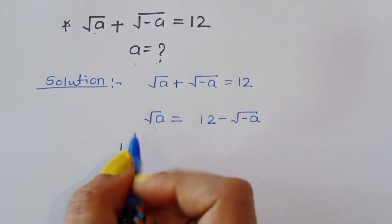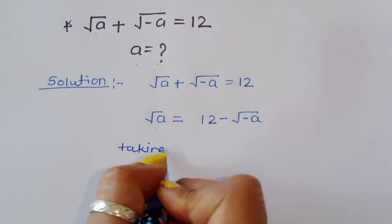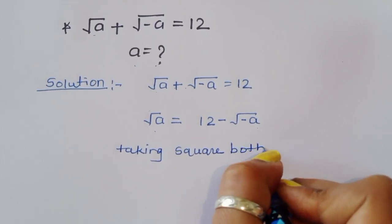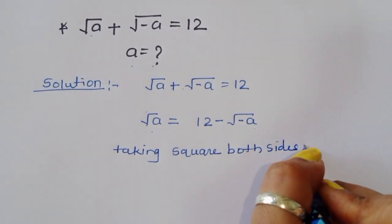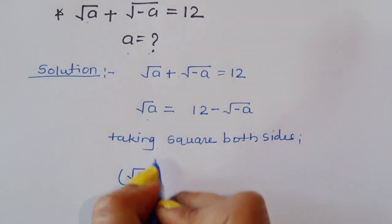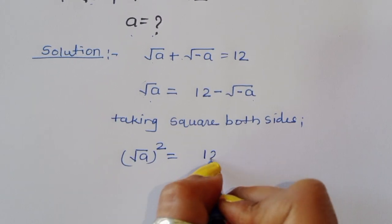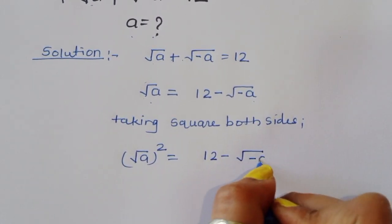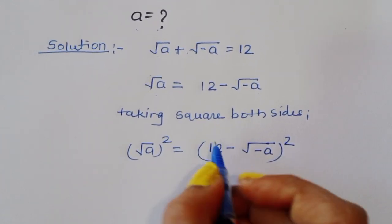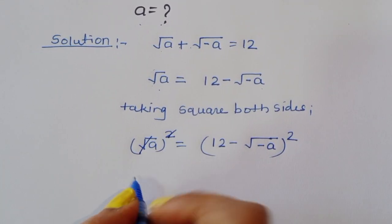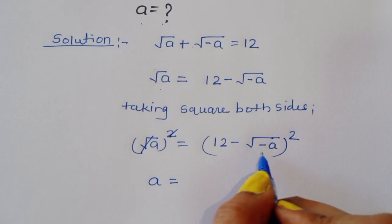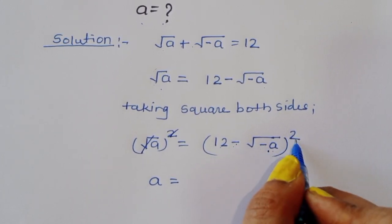Because we have to remove the square root, taking square both sides: (√a)² = (12 − √(−a))². The square cancels from the square root, so a = (12 − √(−a))². This is the (a − b)² formula.